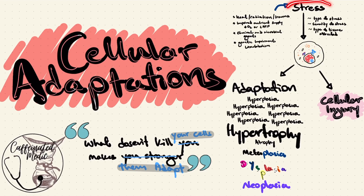When a cell experiences stress, the cell can undergo adaptation to this specific stress. We'll look into hyperplasia, hypertrophy, atrophy, metaplasia, as well as the more pathological adaptations: dysplasia and neoplasia.